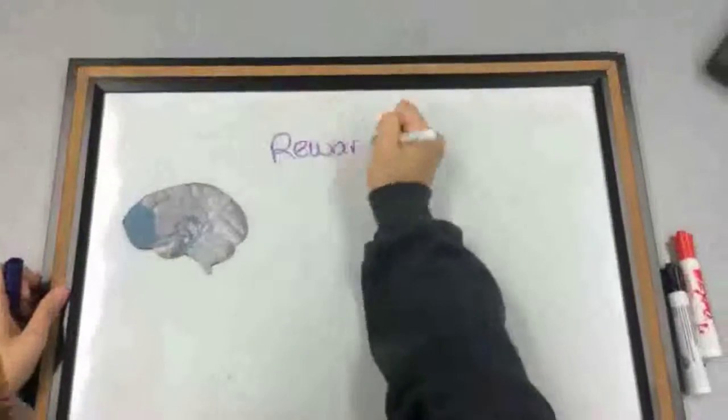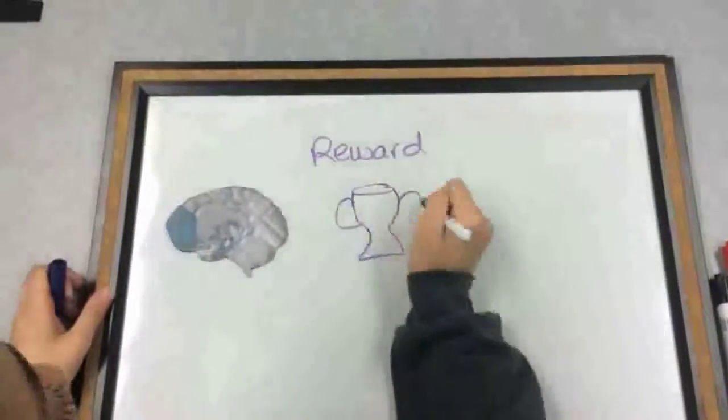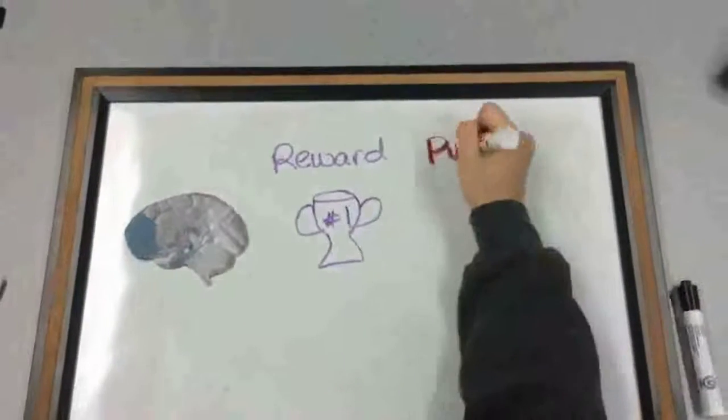We will begin by describing the system in the brain that processes emotions and drives you to seek rewards and avoid punishment.